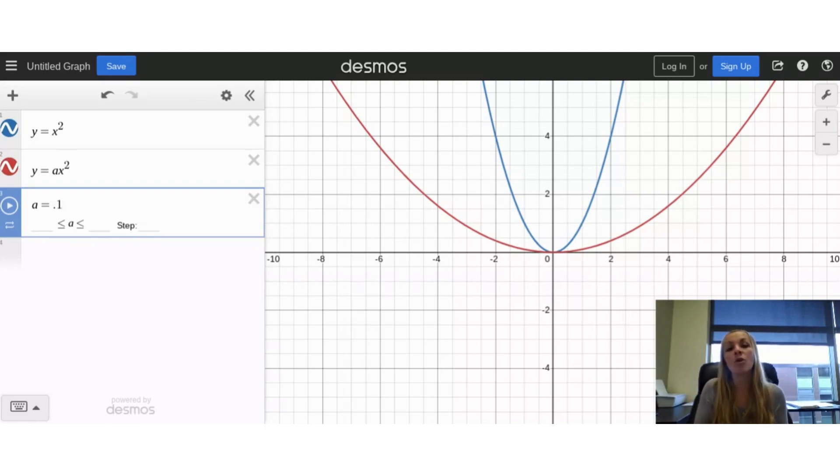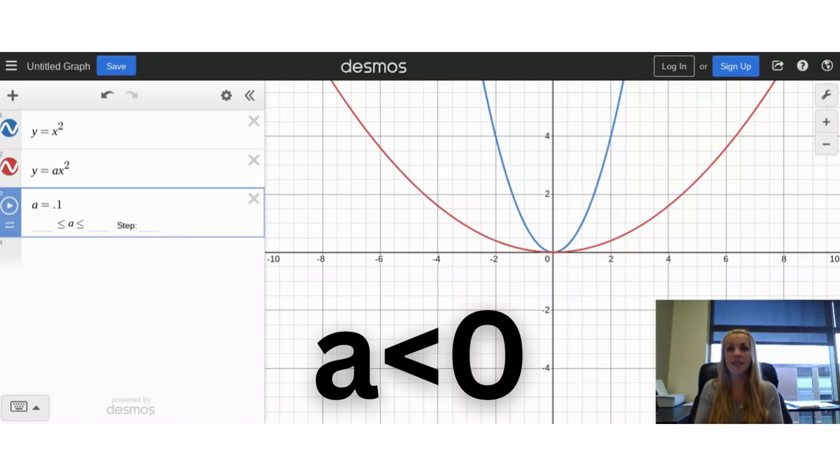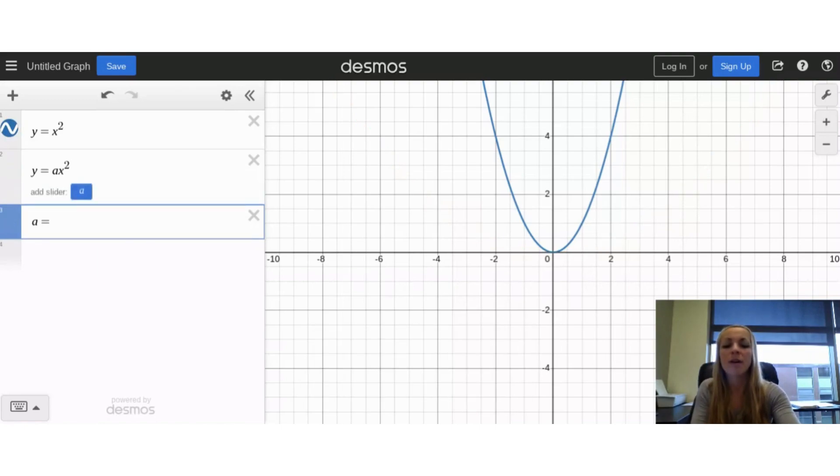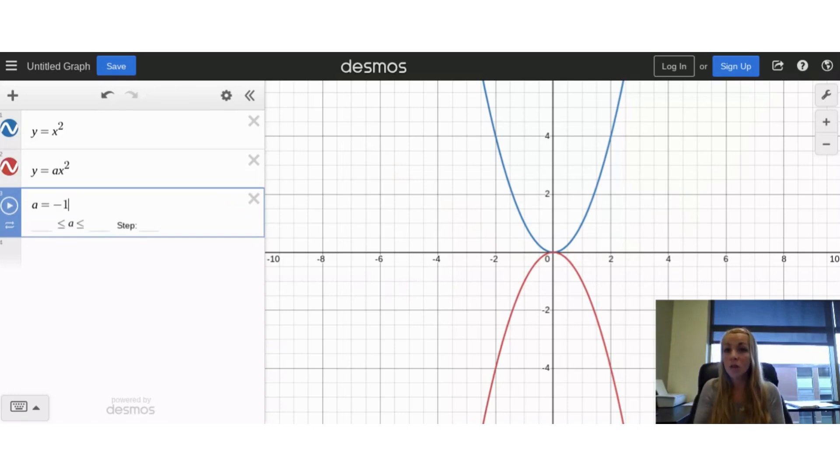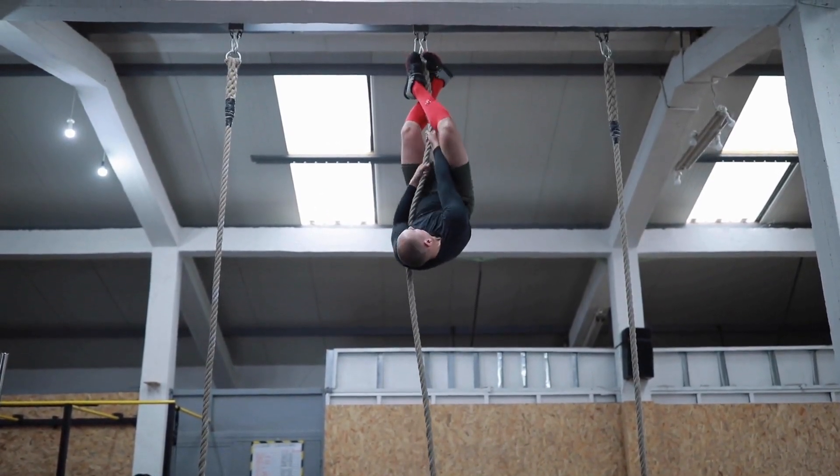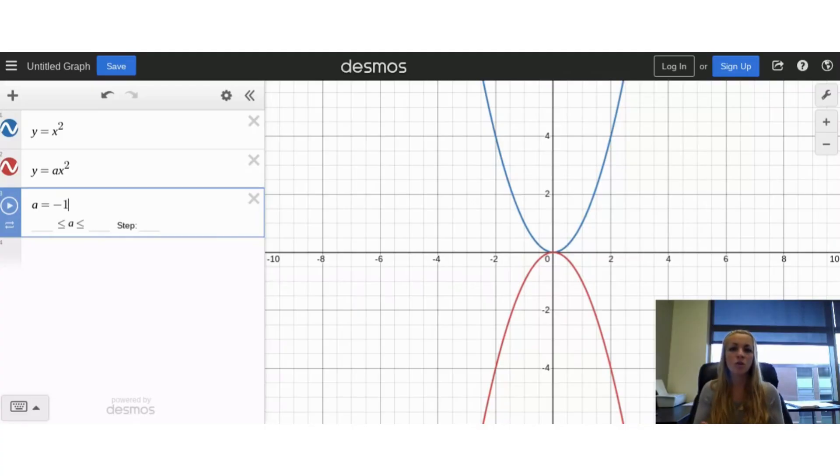The last thing we can explore when it comes to a is what happens if a is negative. What if a is less than 0? So if I put a negative 1, the stretch factor is the same as the parent, but it flips over the graph. So stretch factor remains the same, but the a value, if it's negative, it's flipped over the x-axis.